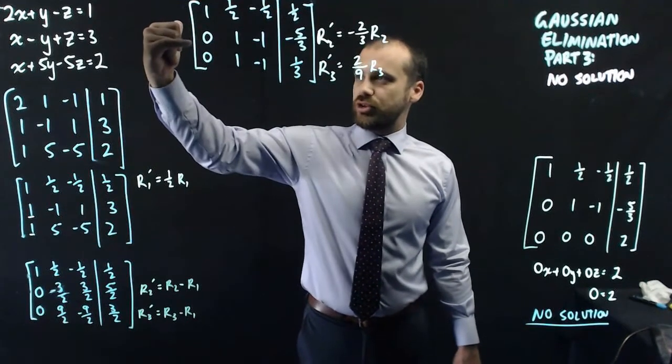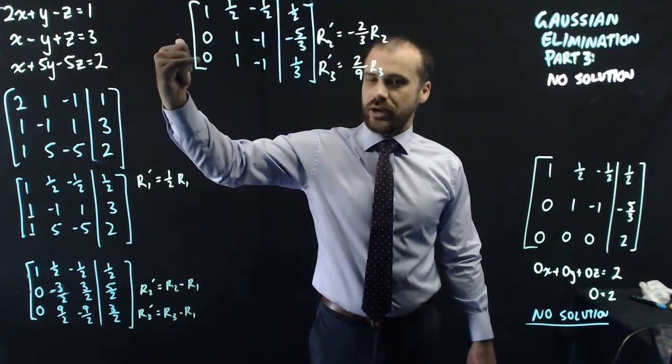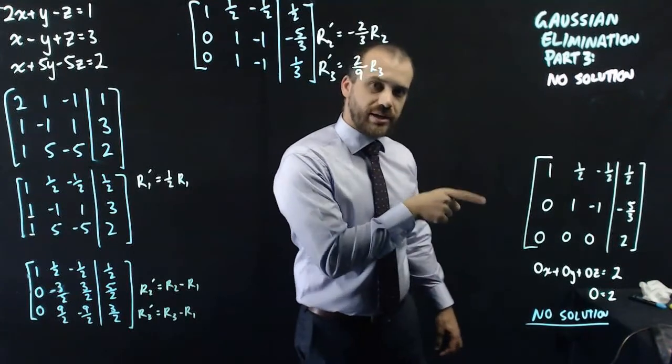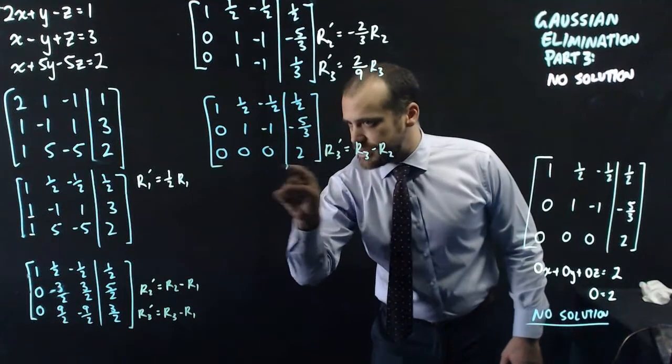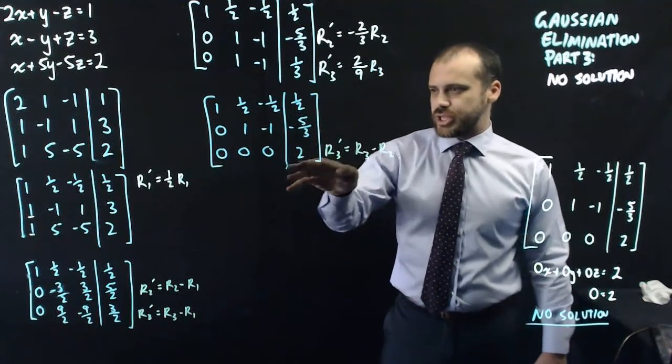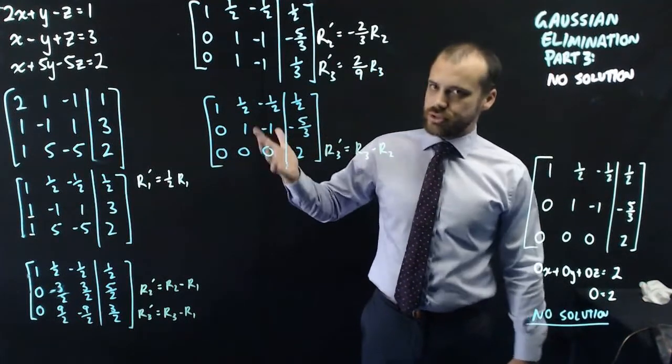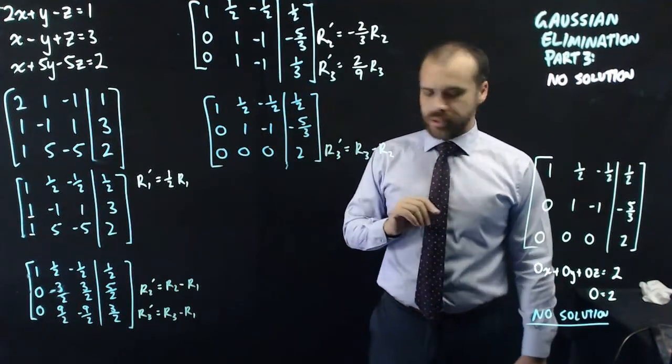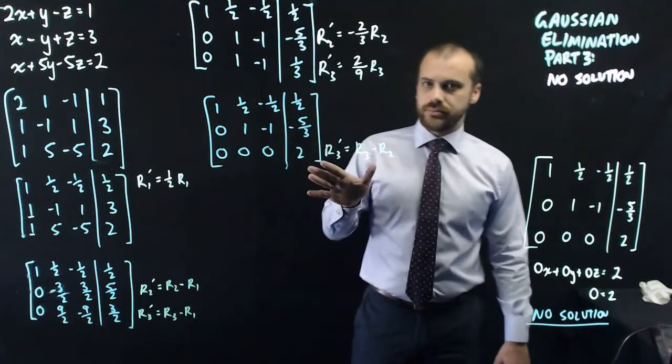Alright, so let's subtract row two from row three in our next step, and we're going to end up about here. And we're here, and this is the important bit, that's the contradiction, therefore there is no solution to this Gaussian elimination problem. Alright, that's it.